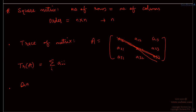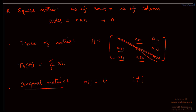The next is the diagonal matrix. A diagonal matrix is defined only for a square matrix. Except the principal diagonal, all other elements are 0. So A21, A31, A32, A12, A13, A23 — all of these are 0. At least one of the principal diagonal elements should be non-zero, and all the off-diagonal terms should be 0. When i is not equal to j, Aij must be 0. This is a diagonal matrix.